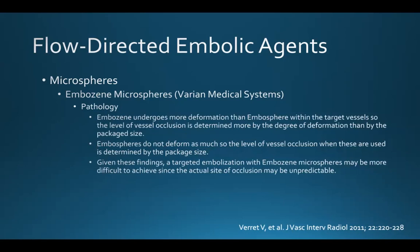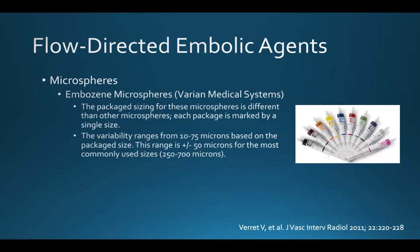As a result, embosene microspheres deform more than embosphere microspheres within target vessels, so the level of occlusion is determined more by this deformation than by the package size. Embospheres don't deform as much, so their level of vessel occlusion is determined more by the package size. Given these findings, targeted embolization with embosene microspheres may be more difficult to achieve since the actual site of occlusion may be unpredictable. The package sizing for embosene is marked by a single size, with variability usually plus or minus 50 microns for the most commonly used sizes of 250 to 700 microns.